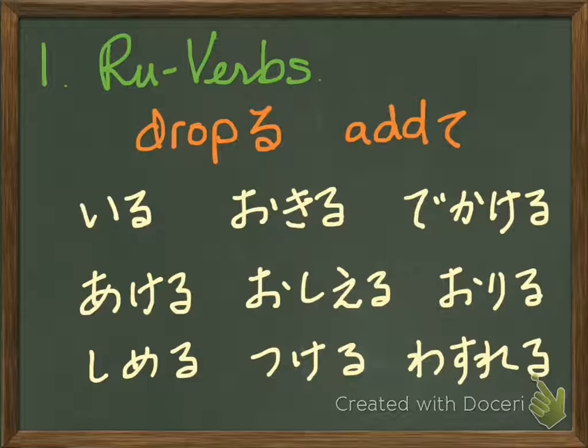Ru-verb — it's easy. You drop the last ru and add te, and you make te-form. Ru-verbs are iru and eru ending sound verbs.